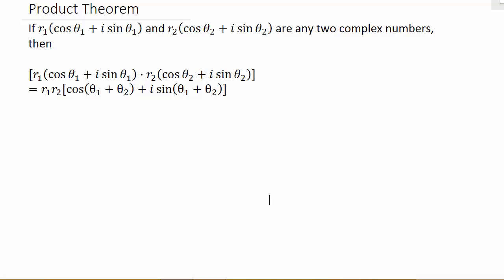In this video, we're going to look at multiplying complex numbers that are in trigonometric form. So let's suppose that we have two complex numbers: r₁(cos θ₁ + i sin θ₁) and r₂(cos θ₂ + i sin θ₂).